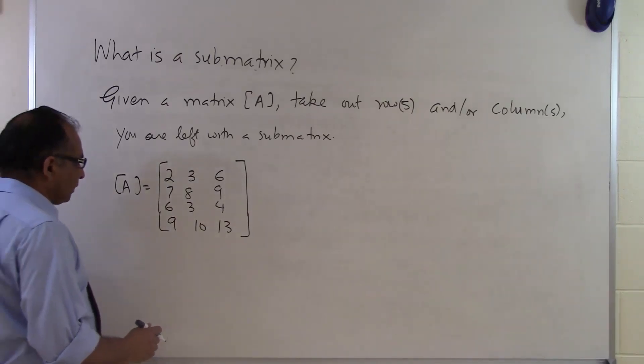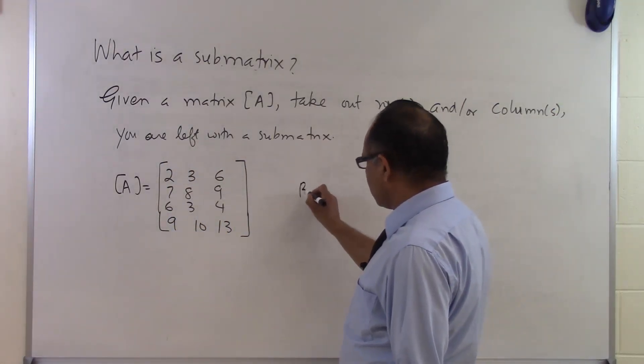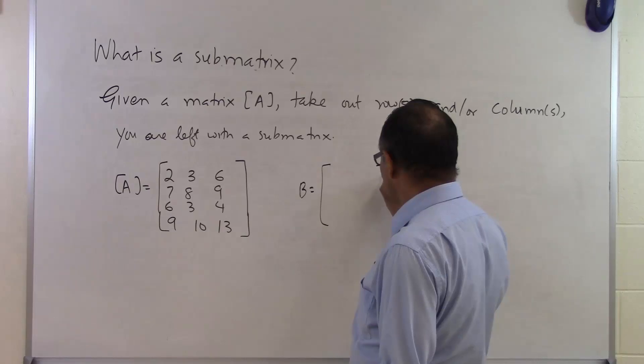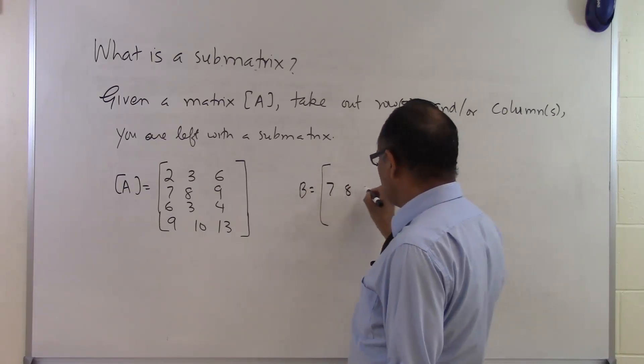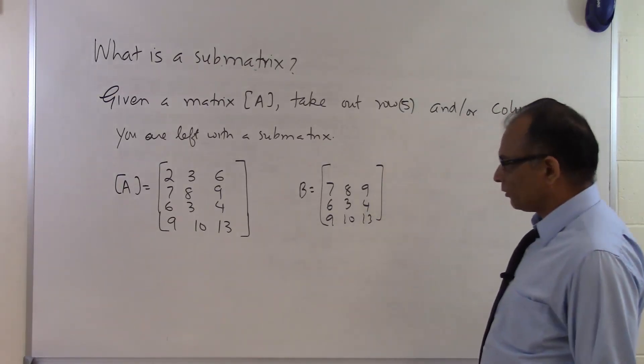So for example if I get rid of the first row then what am I left with? I am left with a submatrix which has the other three rows in it which is 7, 8, 9, 6, 3, 4, 9, 10, 13. So that's a submatrix.